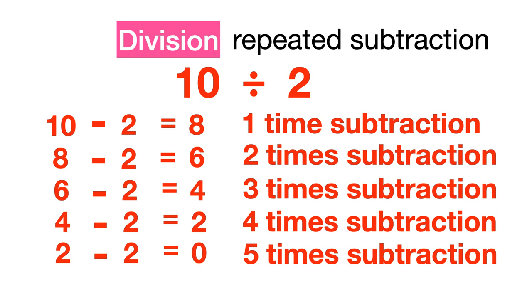Since 0 cannot be divided by 2 anymore, the division is completed. The correct answer is 5.